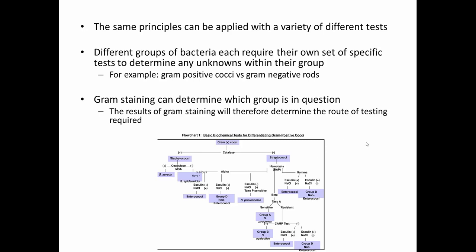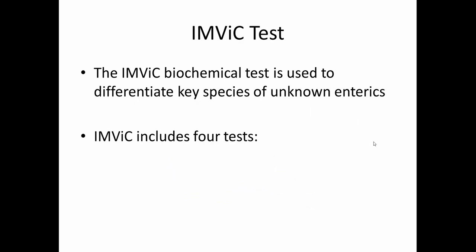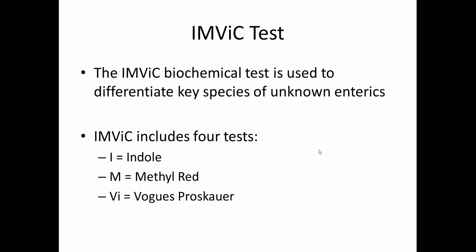Now we want to look at a specific group of tests called the IMVIC test. The IMVIC test is a biochemical test specifically used to differentiate key species of unknown enterics. These particular tests have been found to work really well when you've got a handful of enterics and you want to narrow down which is which. IMVIC is an acronym that stands for Indole, Methyl red, Voges-Proskauer, and Citrate — four tests combined to make one broad biochemical test.